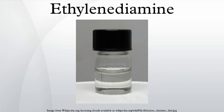Ethylenediamine is manufactured industrially from 1,2-dichloroethane and ammonia under pressure at 180 degrees Celsius in an aqueous medium. In this reaction hydrogen chloride is generated, which forms a salt with the amine. The amine is liberated by addition of sodium hydroxide and can then be recovered by rectification. Diethylenetriamine and triethylenetetramine are formed as byproducts.